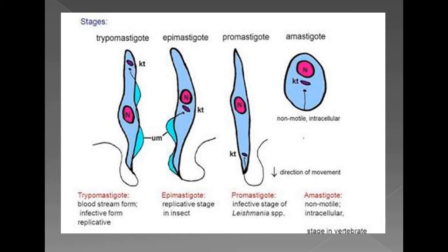Then there is Epimastigote. In this form, the flagellum arises from the lateral side of the mastigote body, forms a short undulating membrane, and the flagellum arises from the anterior end. The last one is Trypomastigote. In this, the flagellum starts arising from the posterior end as an undulating membrane and comes out of the body from the anterior end.